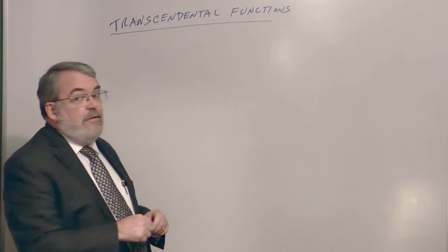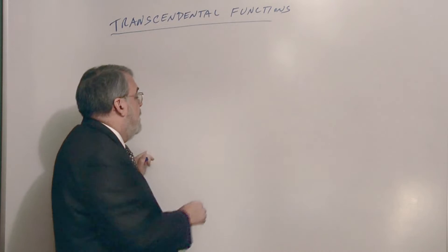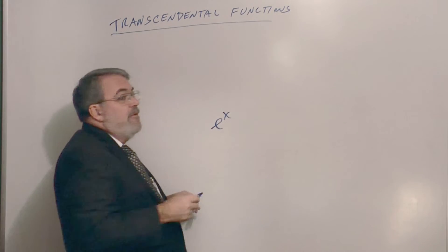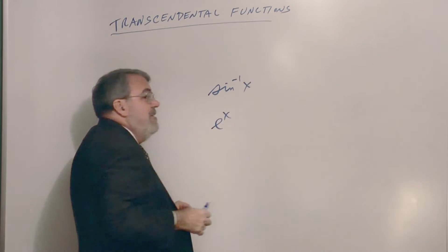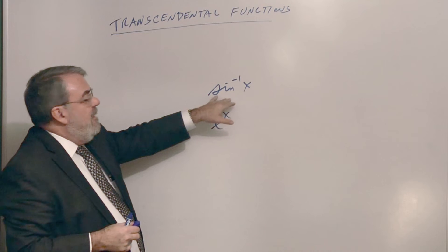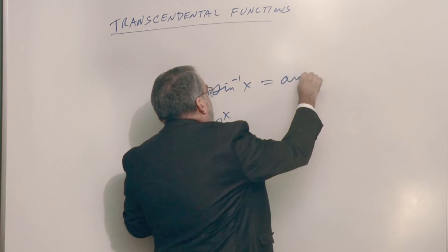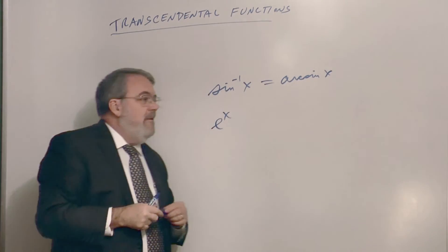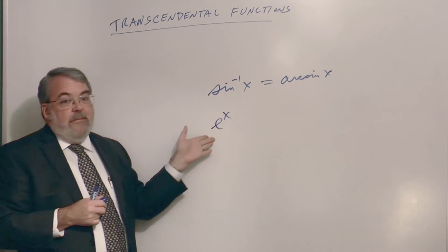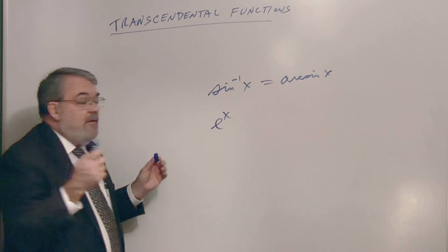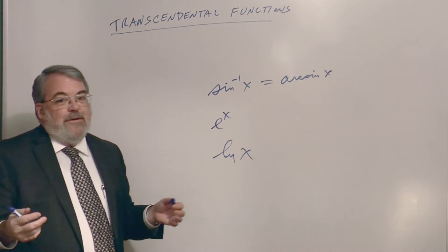These include the inverse trig functions and the exponential functions, like e to the x — that's an exponential function. An example of an inverse trig function is what we read as the inverse sine of x; older books might write it as arc sine x. Those are transcendental. Exponential functions are transcendental. Logarithmic functions — we typically use natural log — are also transcendental.